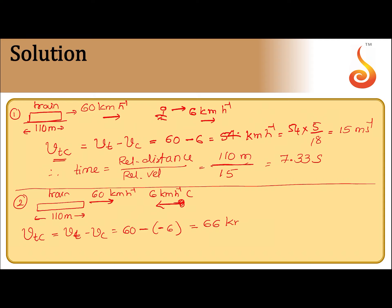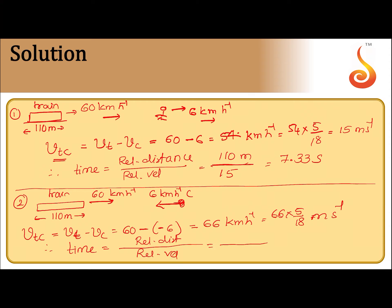So the relative velocity becomes 66 kilometers per hour, that is 66 × 5/18 meters per second. Time taken is equal to relative distance divided by relative velocity: relative distance is 110, relative velocity is 66 × 5/18. Upon simplification, this becomes 6 seconds.